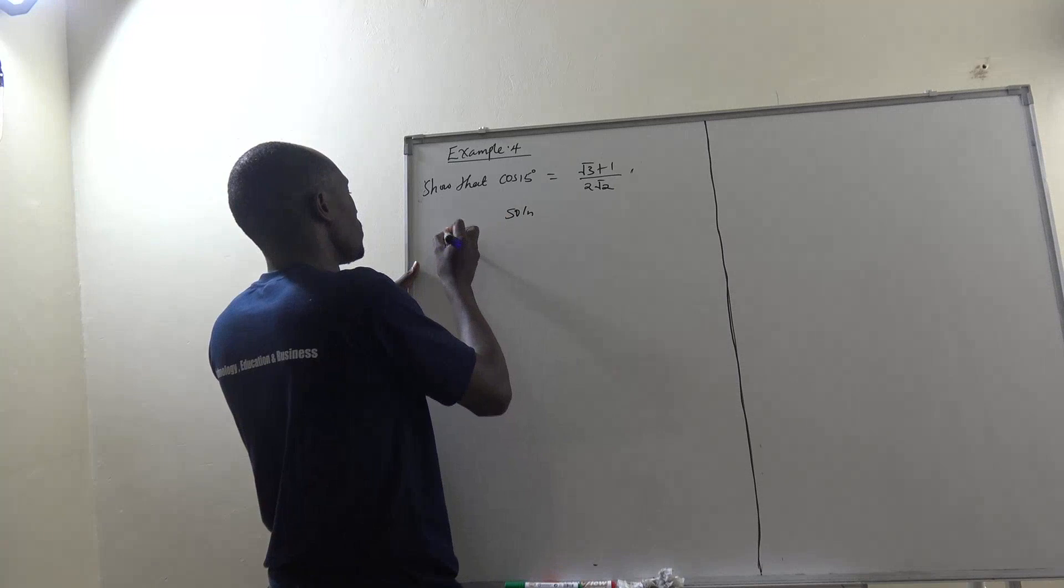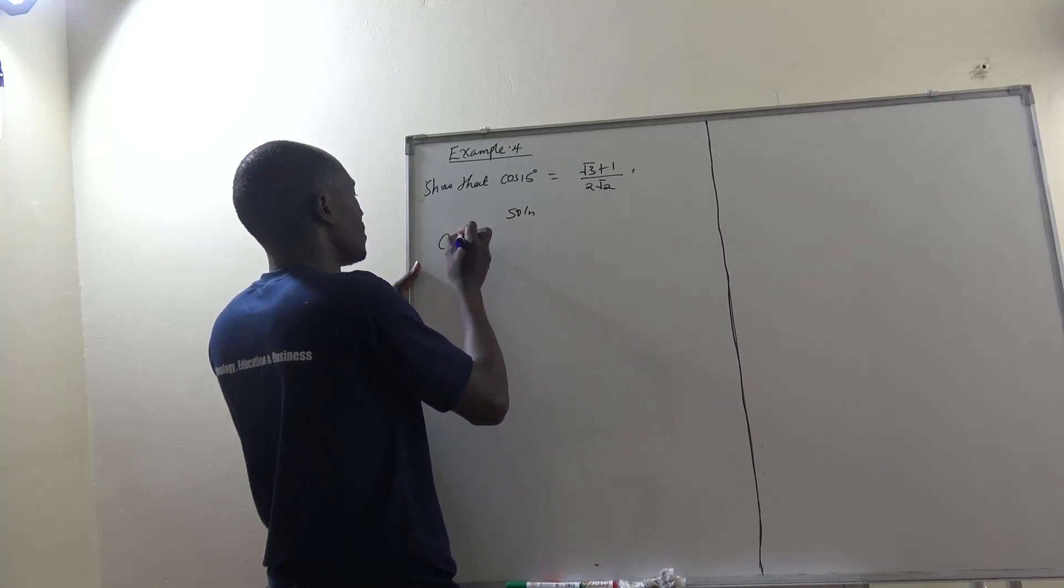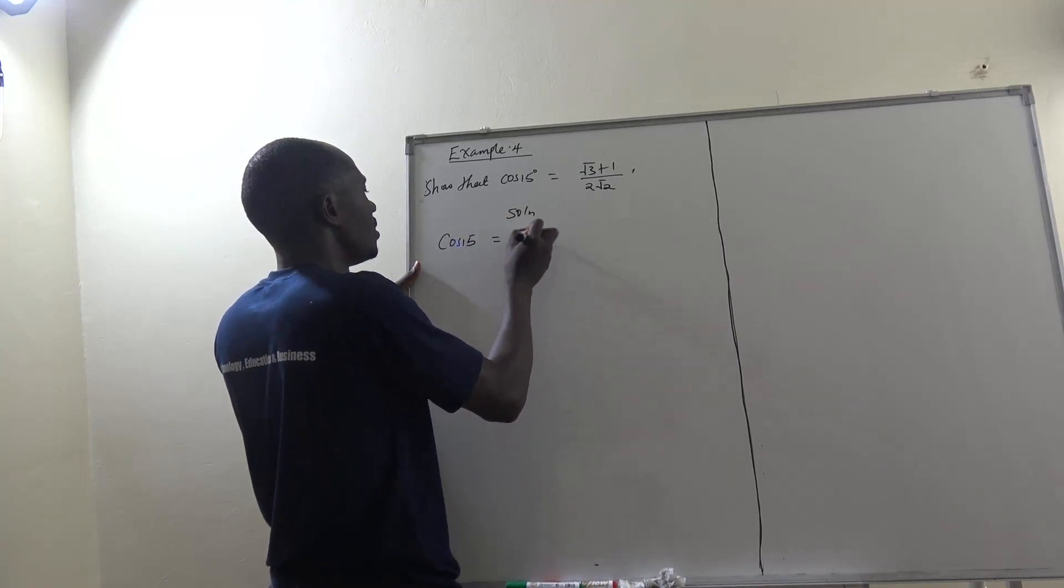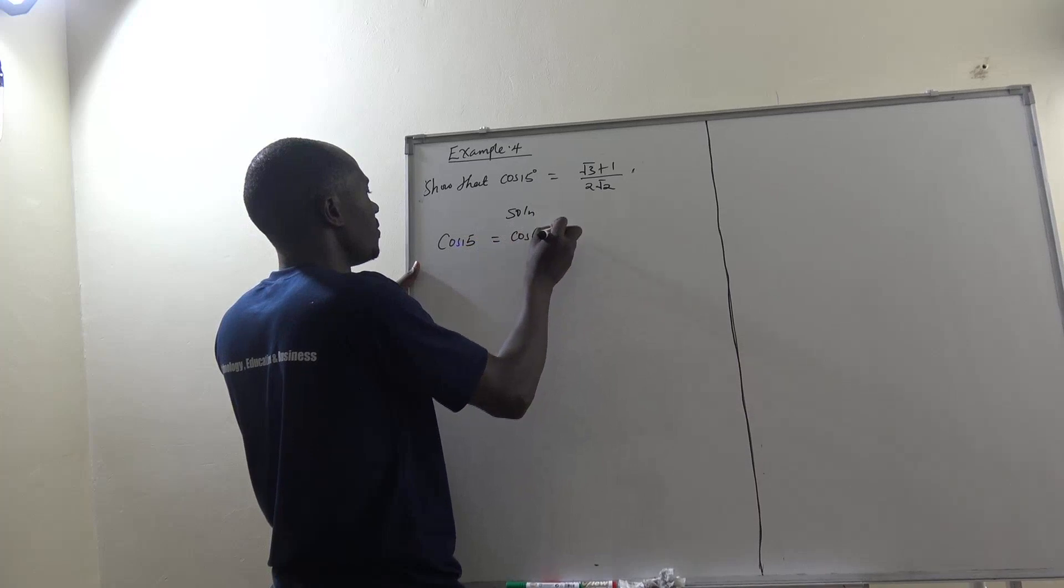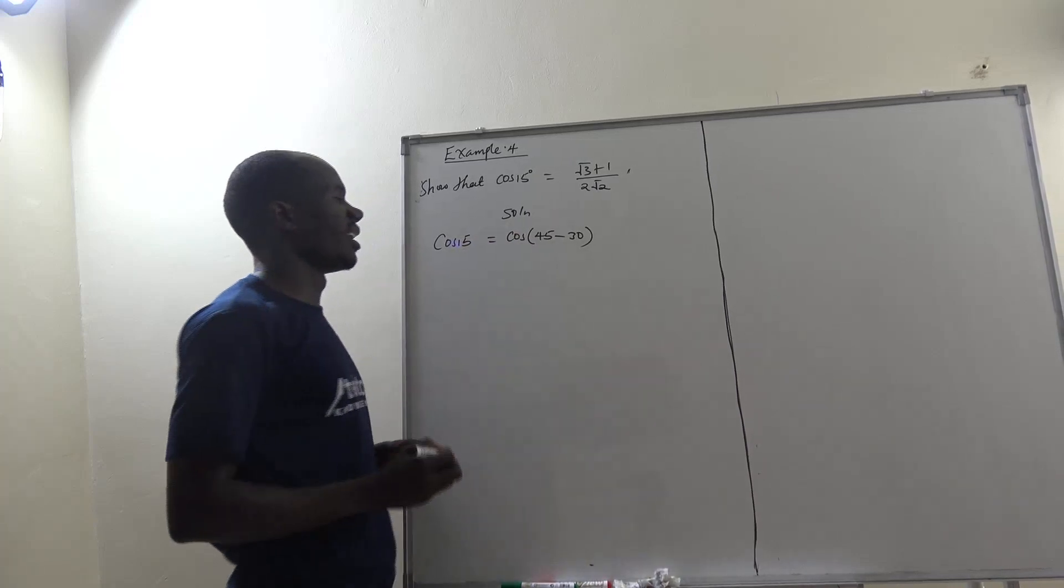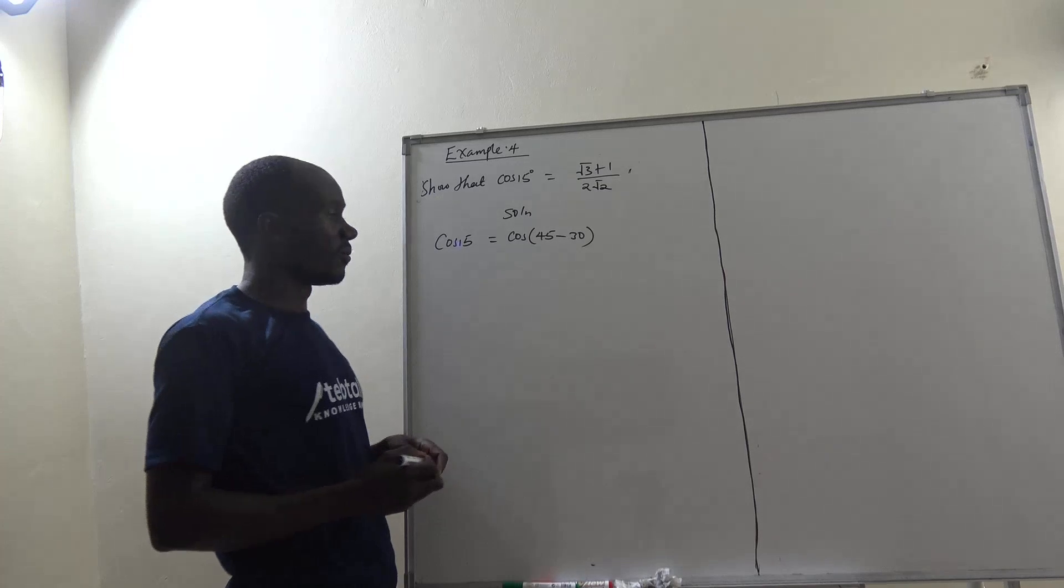So listen, cos of 15 is the same as cos of 45 minus 30. 45 minus 30 will come out with 15.